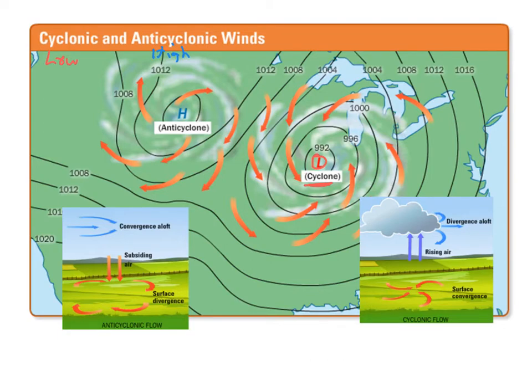On our map here you can see all of these different lines — these are our isobars. These show us areas where pressure is going to be the same. Notice that pressure decreases toward the low and then increases back up to the high. We can see pressure going down to a low and then increasing back up to the high.